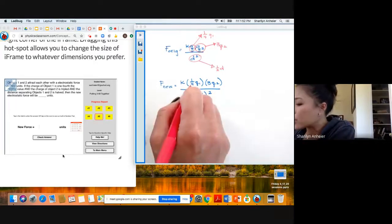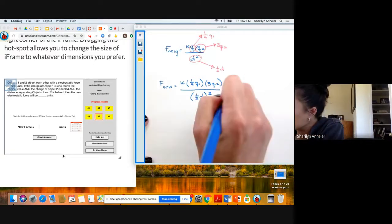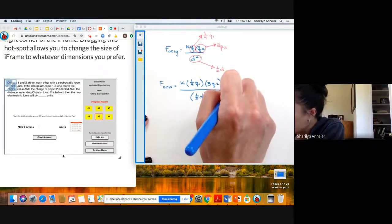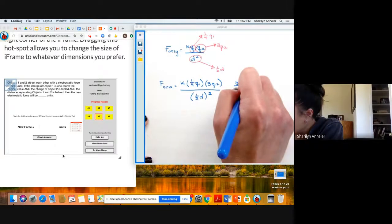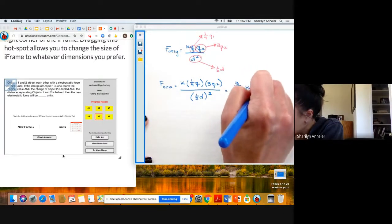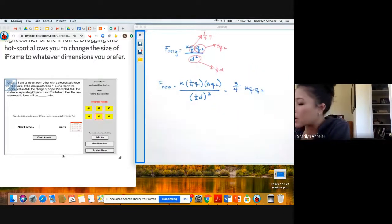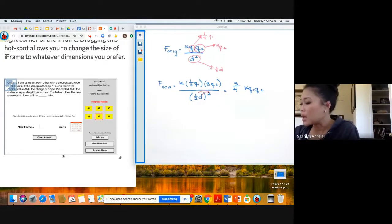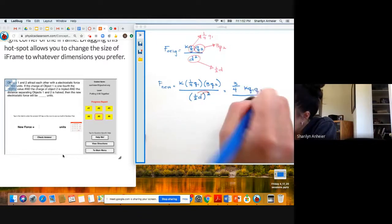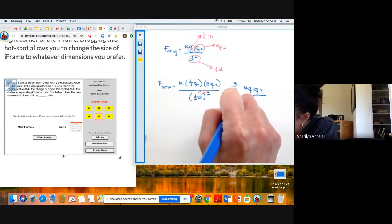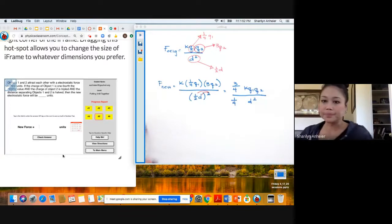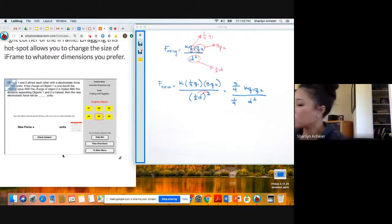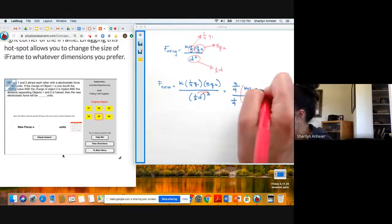So one-fourth and three. I'm just going to write that out as three-fourths in the very front. And then I'm going to have KQ1Q2 by itself. And then in the denominator, I always want to distribute my power to each term. And then I'm going to end up with below one-fourth and this is my fraction D squared. So this is a good problem because it addresses fractions within a fraction, which a lot of students have trouble with.